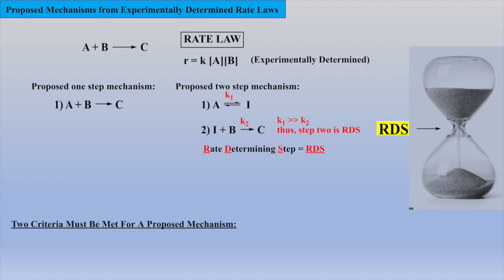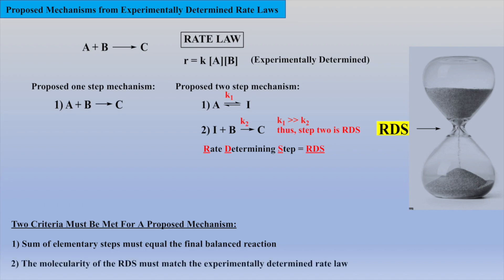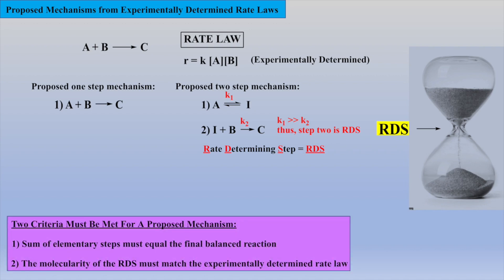Two criteria must be met for a hypothesized mechanism. First, the elementary steps must add up and match the overall balanced equation. Second, the molecularity of the rate-determining step must match the experimentally determined rate law. With just these basics, let's examine some proposed mechanisms.